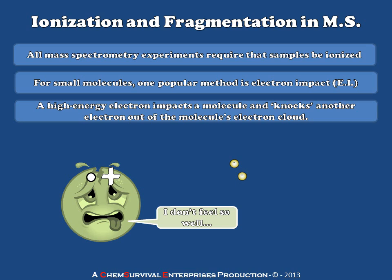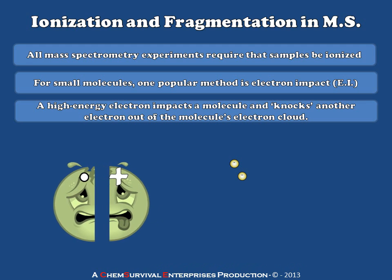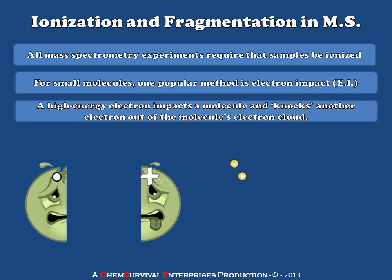Being struck with a high-energy electron and left in this state doesn't usually sit too well with the molecules, and so they have a strong tendency to break. And not only that, when they do break, they typically break in predictable ways at functional groups. These ways usually result in the radical and the cation taking separate sides. Let's take a look at a specific molecule instead of a cartoon and see how this fragmentation manifests itself in mass spectrometry experiments.